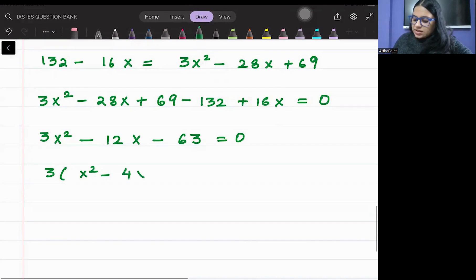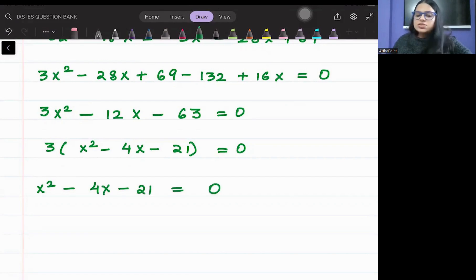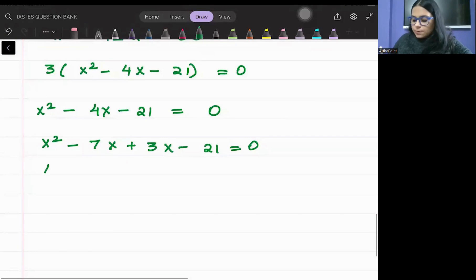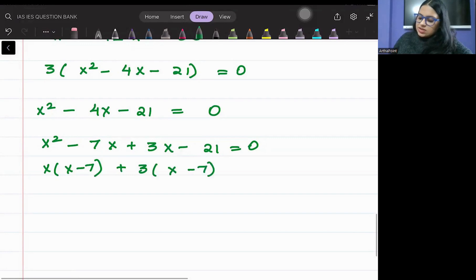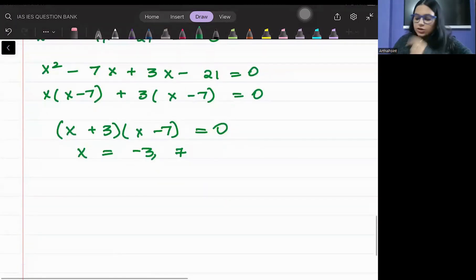Take 3 common - X square minus 4X minus 21 is equal to 0. Factorize: X square minus 7X plus 3X minus 21 is equal to 0. So X into X minus 7 plus 3 into X minus 7 equal to 0. X plus 3 times X minus 7 is equal to 0. So X is minus 3 or 7. Beta, quantity cannot be negative, so X ka jo value aayega ho jaega 7.